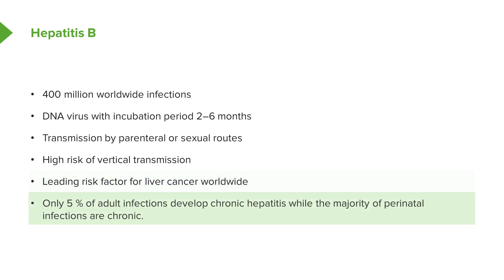Only 5% of adult infections develop chronic hepatitis, with the majority of perinatal infections being chronic. Very rarely do adults go on to chronicity — that would be more hepatitis C. Think of C in hepatitis C as standing for chronicity. However, you can progress to chronicity with hepatitis B, but only a measly 5%. If it's childhood vertical transmission, that's more challenging and there's every likelihood of a child going on to chronicity.